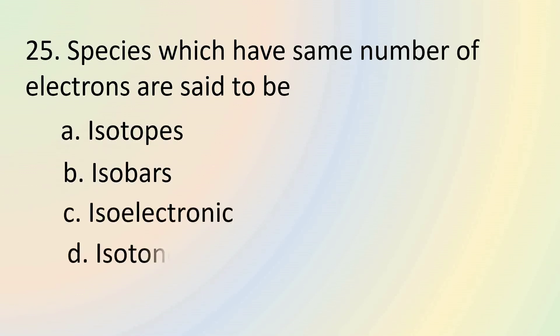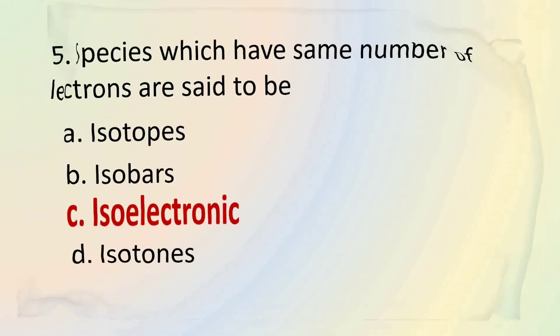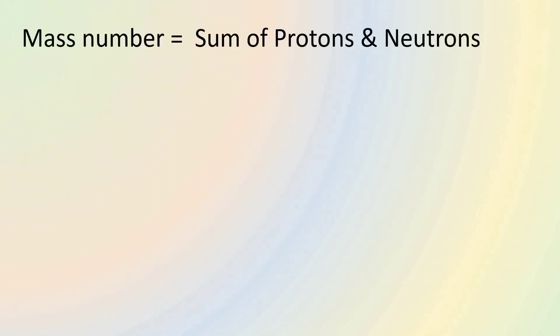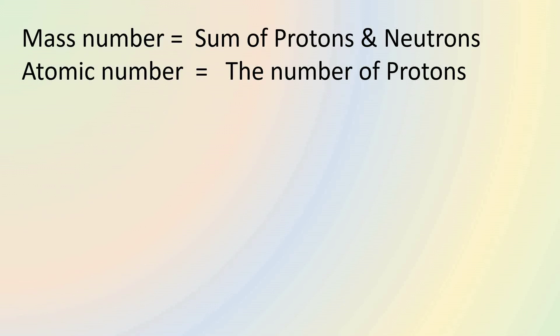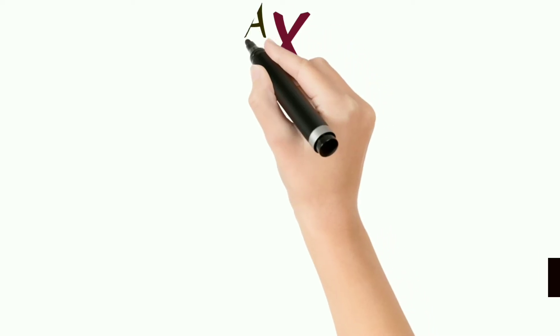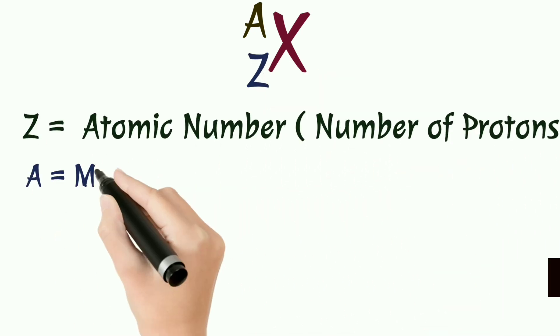The last question asks, what do we call the species which have same number of electrons? We call them to be isoelectronic. Species which have same number of electrons are said to be isoelectronic. Before we understand isotopes, isotones and isobars, we have to understand what mass number and atomic number mean. Mass number is equal to sum of protons and neutrons and atomic number is equal to the number of protons.